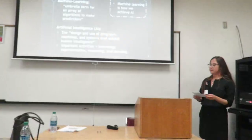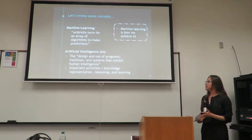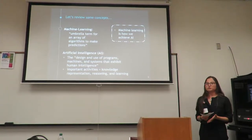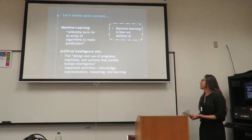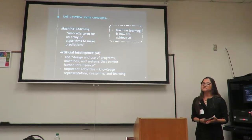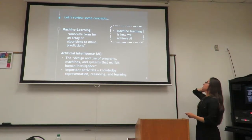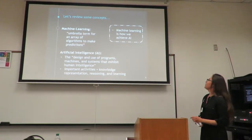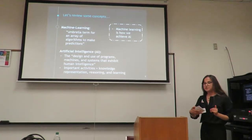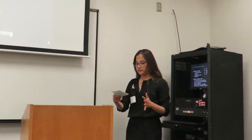Machine learning is the umbrella term for an array of algorithms to make predictions, and this replaces the traditional statistical method. Artificial intelligence is the design and use of programs, machines, etc., meant to exhibit human intelligence. The most important activities are knowledge representation, reasoning, and learning. It's really important to understand that machine learning is how we achieve AI — through releasing large amounts of data into an algorithm and letting it adjust, improve, and train itself.